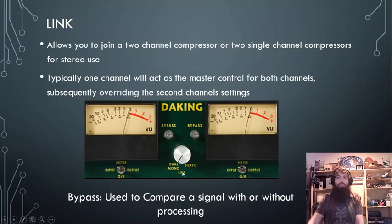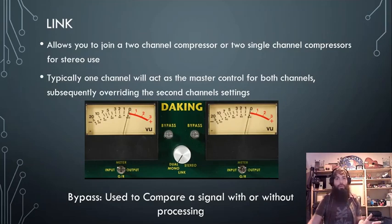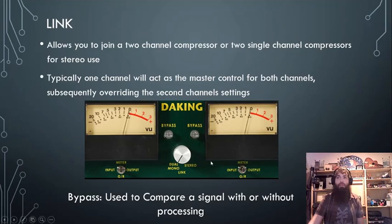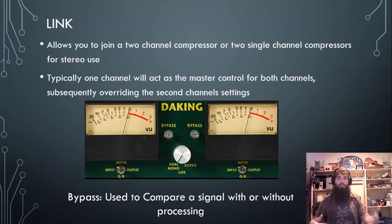Usually there's a link option — dual mono is where you have two completely separate compressors, one could be for kick and the other for vocal. Or you could use stereo mode, where they're linked so you compress the left side equally to the right side.